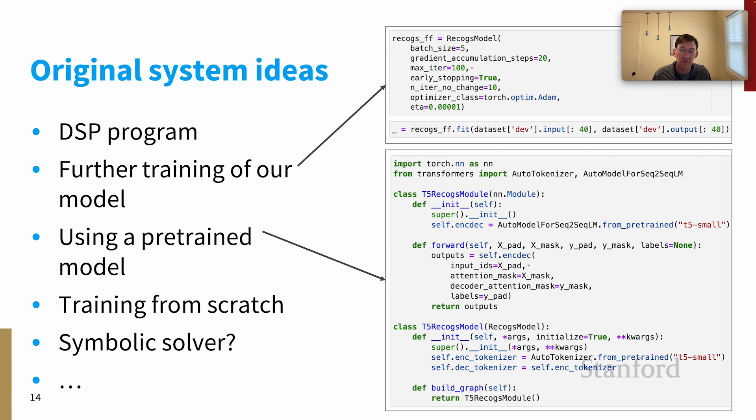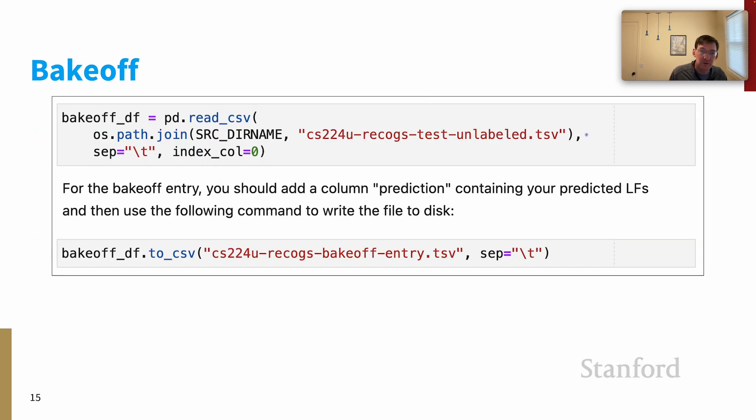And I'll leave other options for you to think about. I'm really keen to see what you all do with the ReCOGS data. And then finally for the bake-off, this is straightforward. There's a TSV file that contains some test cases. Those are generalization test cases. You just need to add a column prediction which contains your predicted logical forms. And then this final code snippet here is what you do to write that to disk for uploading to the Gradescope AutoGrader. And we'll see how you all do on this surprisingly very challenging task of semantic interpretation.